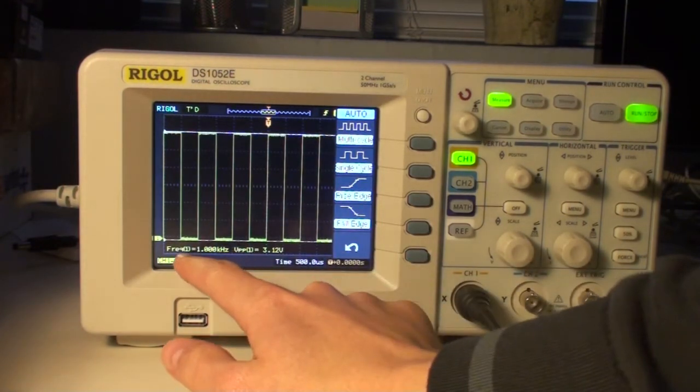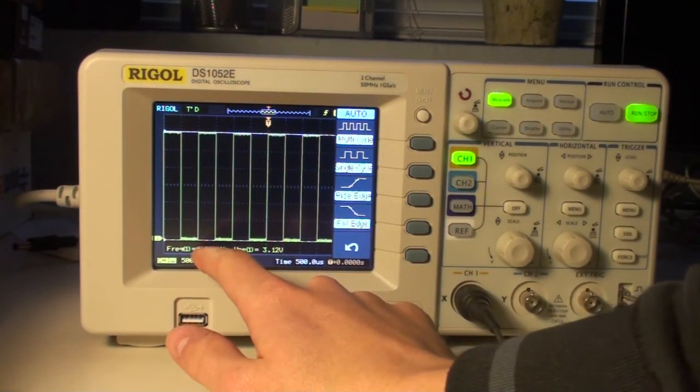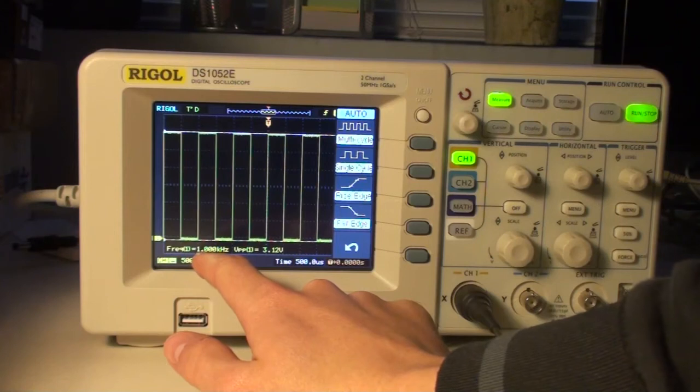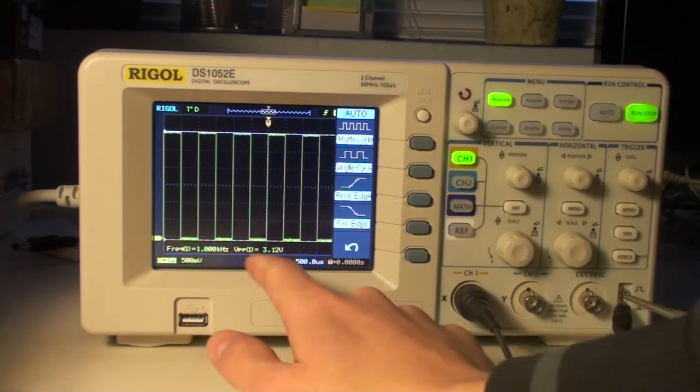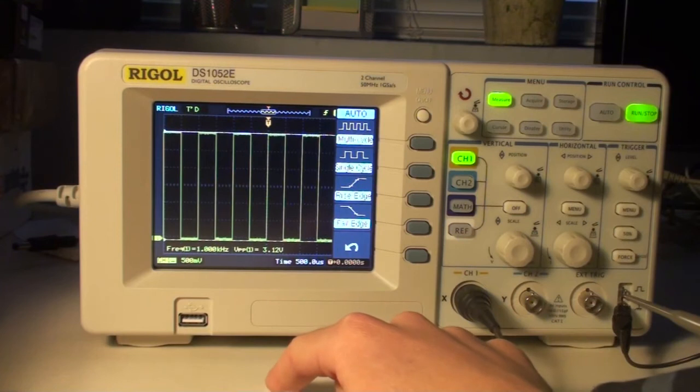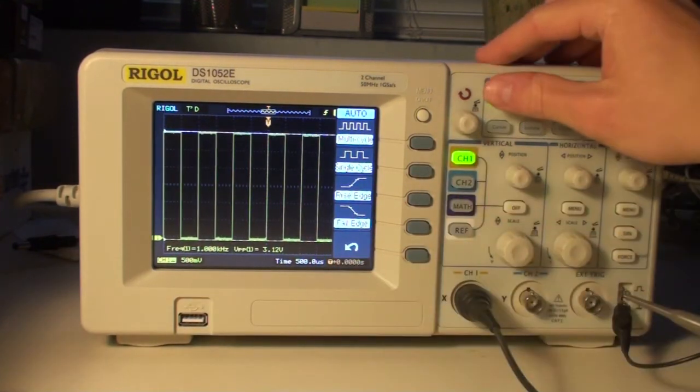Now you'll notice the frequency counter, which we enabled from measure, is shown as 1000 kHz, and the voltage is 3.12 volt. So that's a great thing of the measure button.